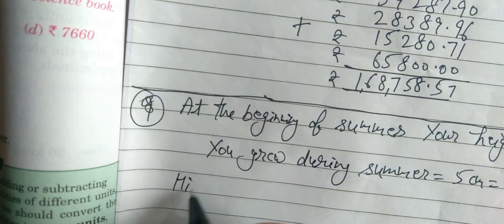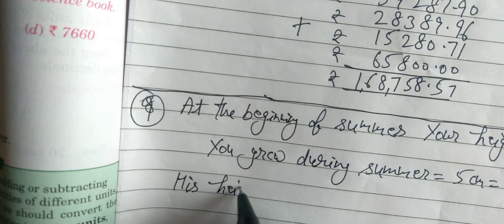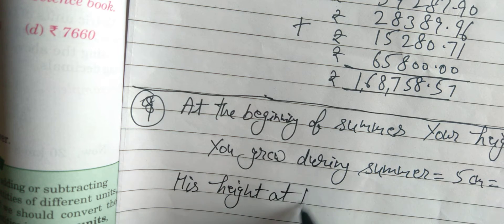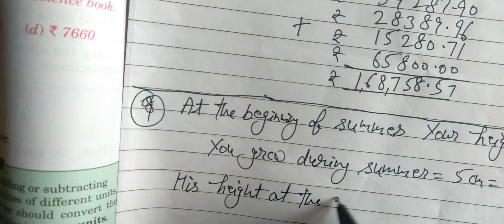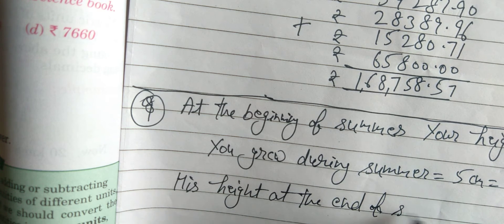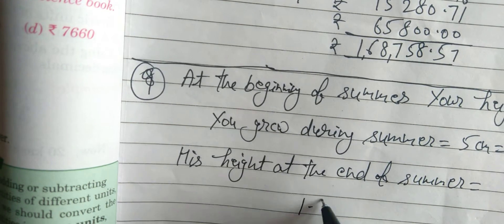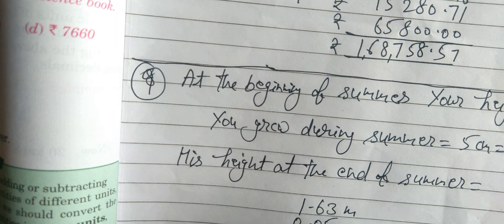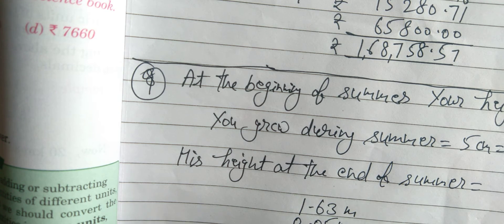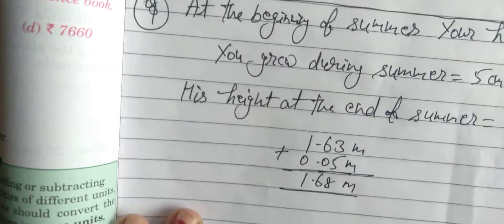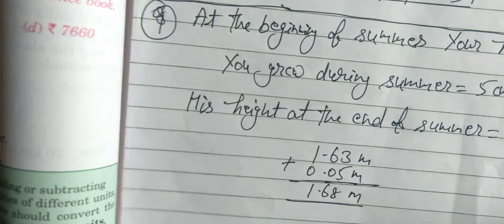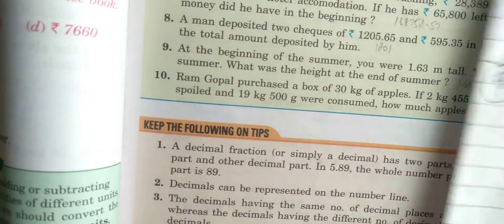His height at the end of summer — summer के last में कितनी height हो गई? दोनों को plus कर दो: 1.63 meter + 0.05 meter। Meter को plus कर सकते हैं। Answer: 1.68 meter। उसकी height हो गई last में।